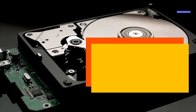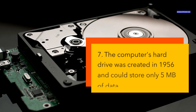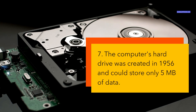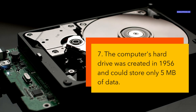The computer's hard drive was created in 1956 and could store only 5 megabytes of data. The hard drive is a device that stores data on magnetic disks that can be accessed by the computer. The first hard drive was invented by IBM in 1956 and was called the RAMAC, Random Access Method of Accounting and Control. It was as big as a refrigerator and could store only 5 megabytes of data, which is equivalent to about one song or one high-resolution photo today.